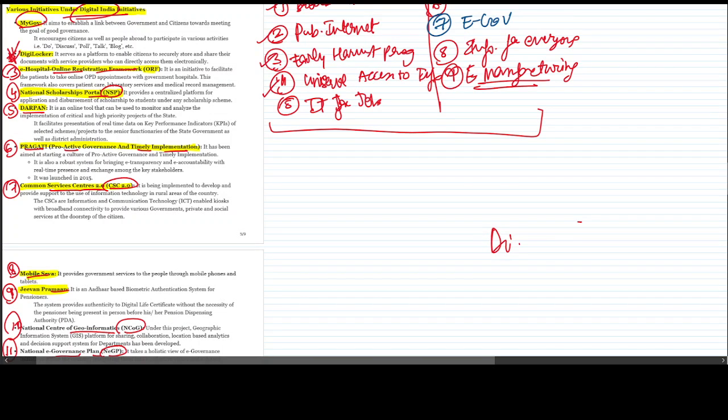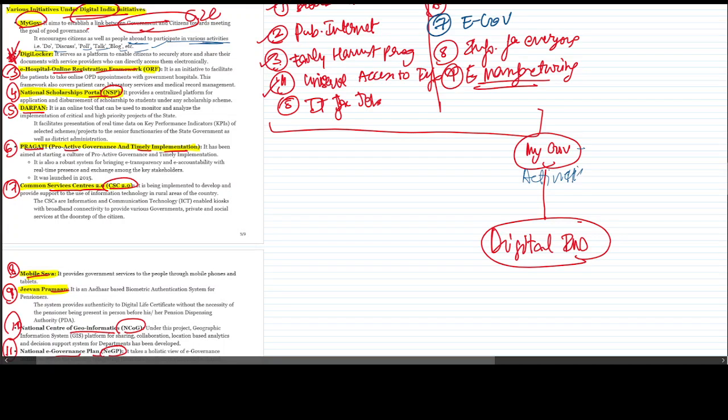So if we write notes on Digital India, the first thing was MyGov portal. It aims to establish a link between government and citizens, that is G2C. It encourages citizens as well as people abroad to participate in various activities. They can discuss, poll, talk, and blog. Basically, activities by the government to make citizens more aware about government activities.